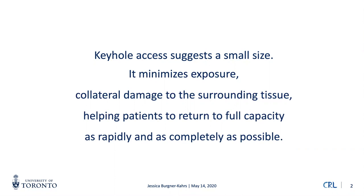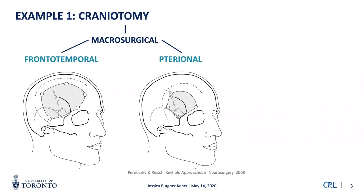I'll give two examples for a more visual understanding of keyhole access. The first is craniotomy, performed to access the brain in neurosurgical applications — for example, to remove a tumor. Conventionally, what has been done for hundreds of years is a regular craniotomy involving a pretty large incision on the skull, and then the bone is removed in a funnel-like approach, causing extensive trauma.